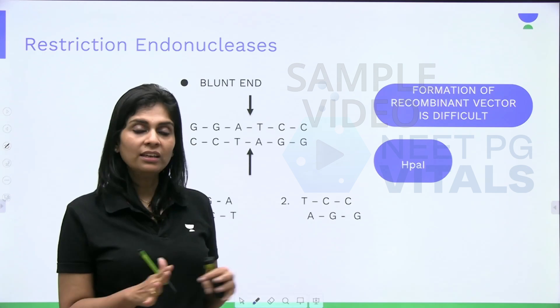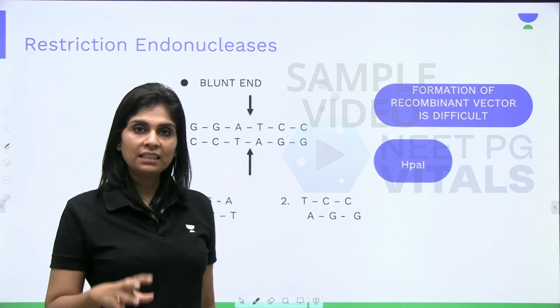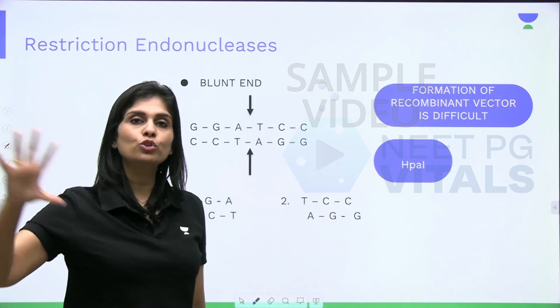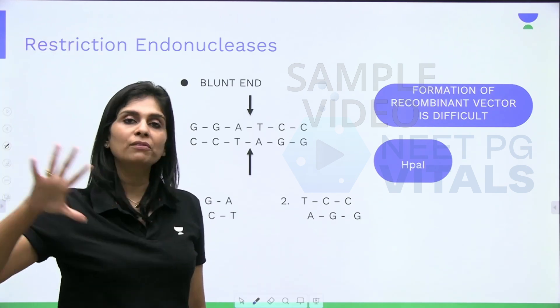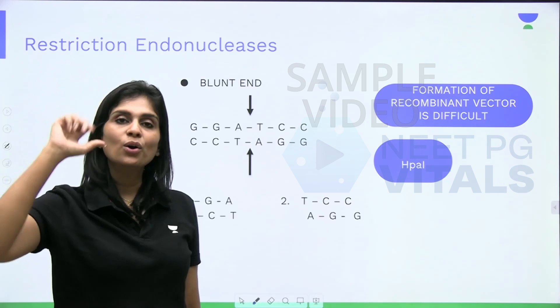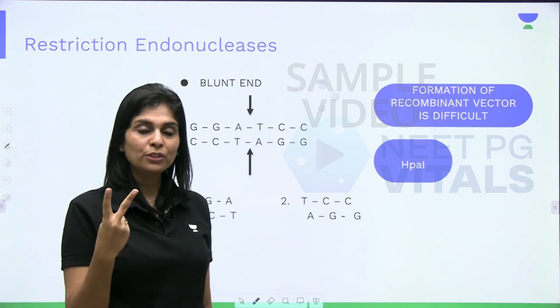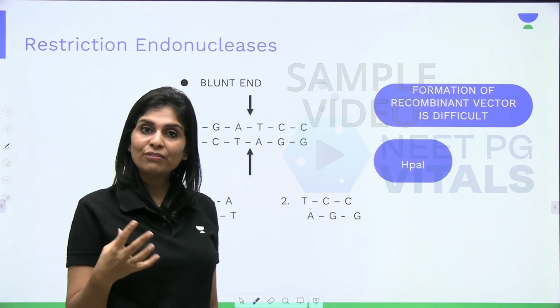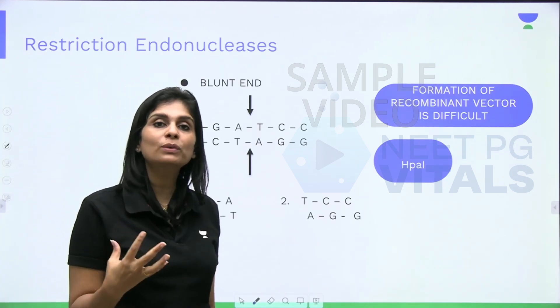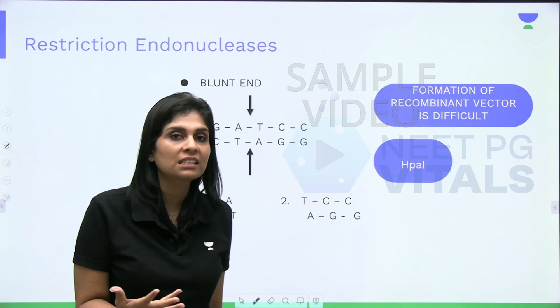That is all about restriction endonucleases. Using these enzymes you have cut the human chromosome into multiple fragments. The next step is identifying the fragment with the gene of interest.